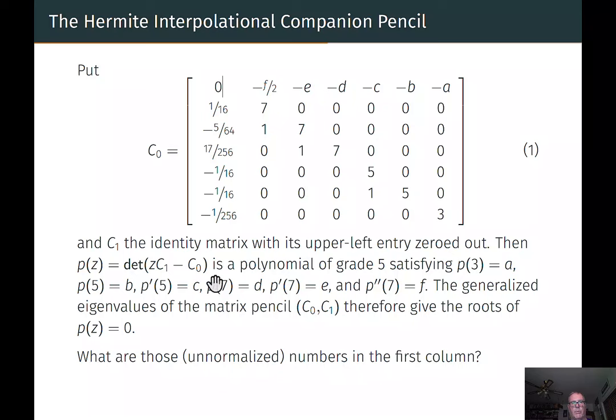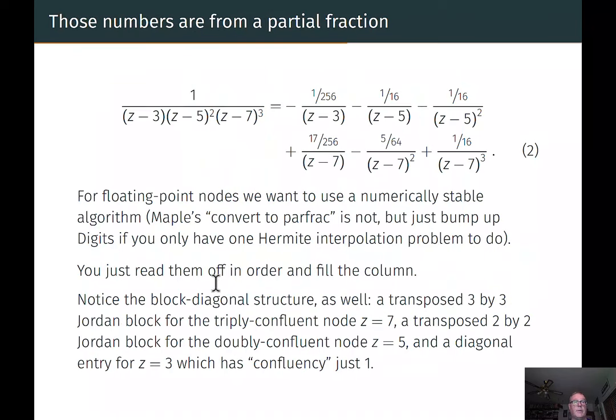So I need to explain what those unnormalized numbers in the first column are. Here's how they're computed. They come from a partial fraction. We have one piece of information at z equals 3, so we've got a z minus 3 to the power of 1. We have two pieces of information at z equals 5, so we've got a z minus 5 squared. We have three pieces of information at z equals 7, so that's z minus 7 cubed. And I just do the partial fraction decomposition expansion of that. I get minus 1/256, minus 1/16th, minus 1/16th, 17/256th, minus 5/64ths, and 1/16th. And those are the numbers that occurred in that first column. Just read them off. And I've talked about the block diagonal structure as well. So if I give you a Hermite interpolational problem, just telling you where the information is and what the information is, you can write down a pair of matrices whose generalized eigenvalues are the zeros of the interpolating polynomial that fits that data.